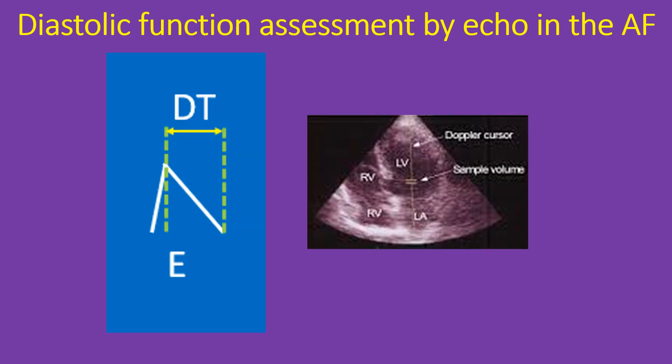Mitral E wave DT less than 100 ms correlates with a pulmonary wedge pressure of more than 18 mmHg. Deceleration time is the duration between the peak of the E wave and the upper deceleration slope extrapolated to the baseline, and is usually measured from the apical 4-chamber view. Pulmonary vein diastolic wave DT is also measured in a similar way from the right upper pulmonary vein in the apical 4-chamber view.